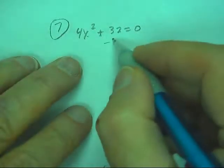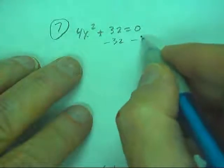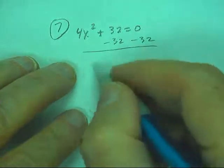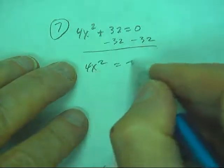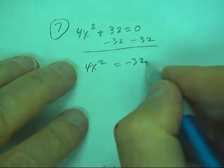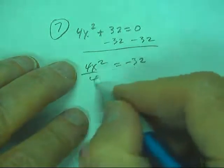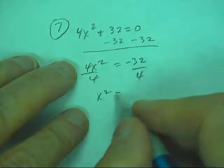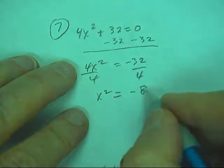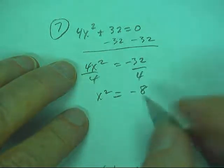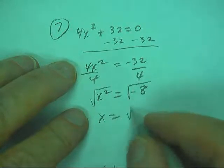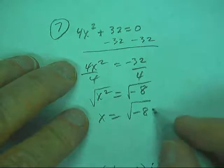They want us to solve this, so let's subtract 32, where x squared equals negative 32. Let's divide by 4, and x squared equals negative 8. Let's take the square root of both sides, and x equals the square root of negative 8.